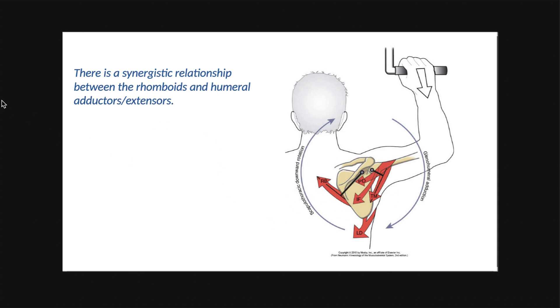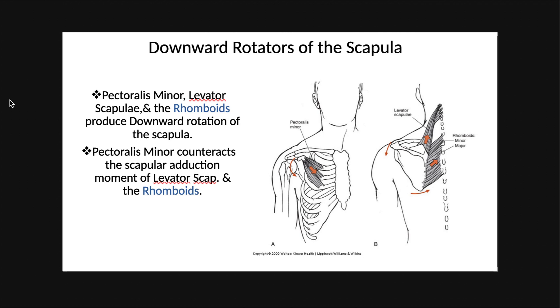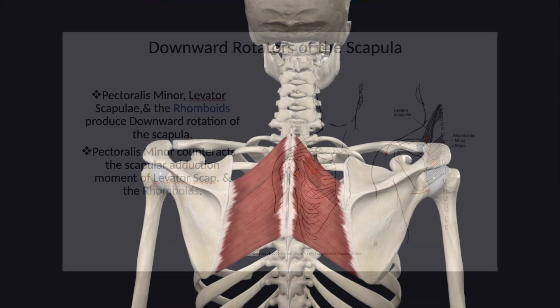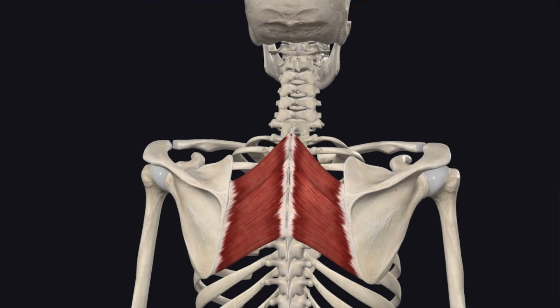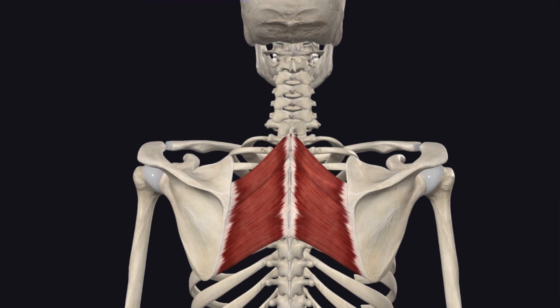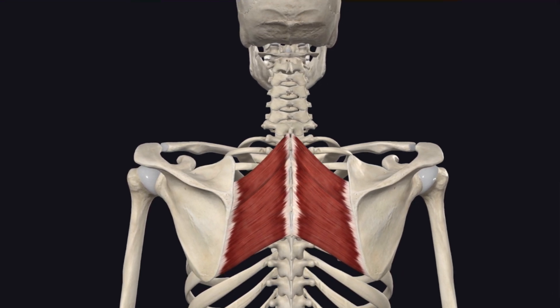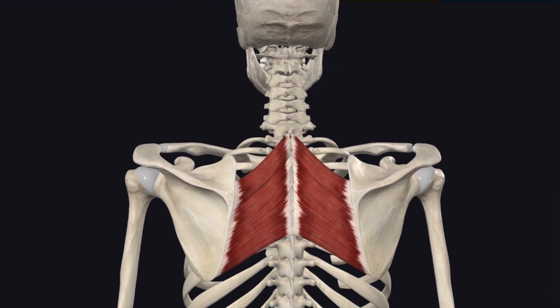There's also a balancing act with pec minor on the other side in regards to maintaining that downward rotation. You're much more likely to see people hitting the lats, posterior deltoid, and pecs in the gym as opposed to rhomboids or middle traps, so it's not abnormal to see those imbalances. The rhomboids are a very important posture muscle for sure.